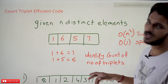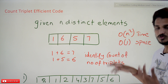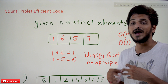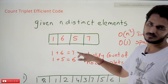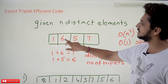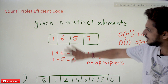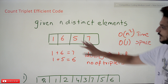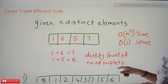Coming to the Count Triplet problem, let's understand the question first. Given n distinct elements — for example, 1, 6, 5, 7 — we have to identify all triplets such that a + b = c. For example, 1 + 6 = 7, so (1, 6, 7) is one triplet. 1 + 5 = 6, so (1, 5, 6) is another triplet. We have to count all such triplets. For this input, the output is 2.